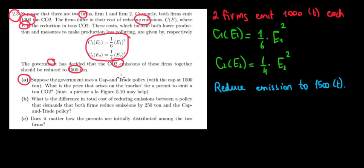In part A, suppose the government uses a cap and trade policy with the cap at 1500 tons. What is the price that arises on the market for a permit?